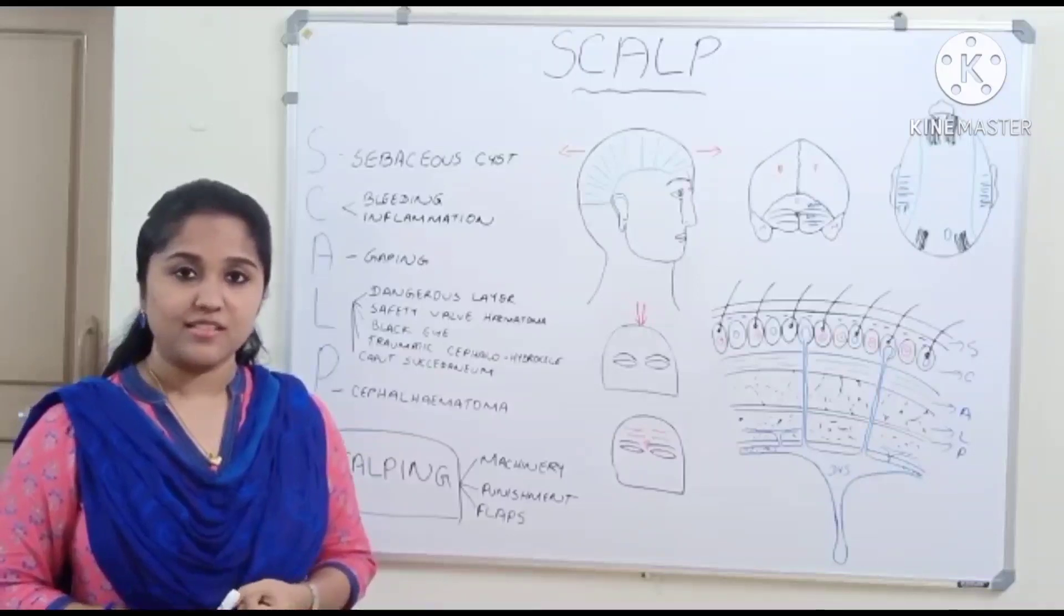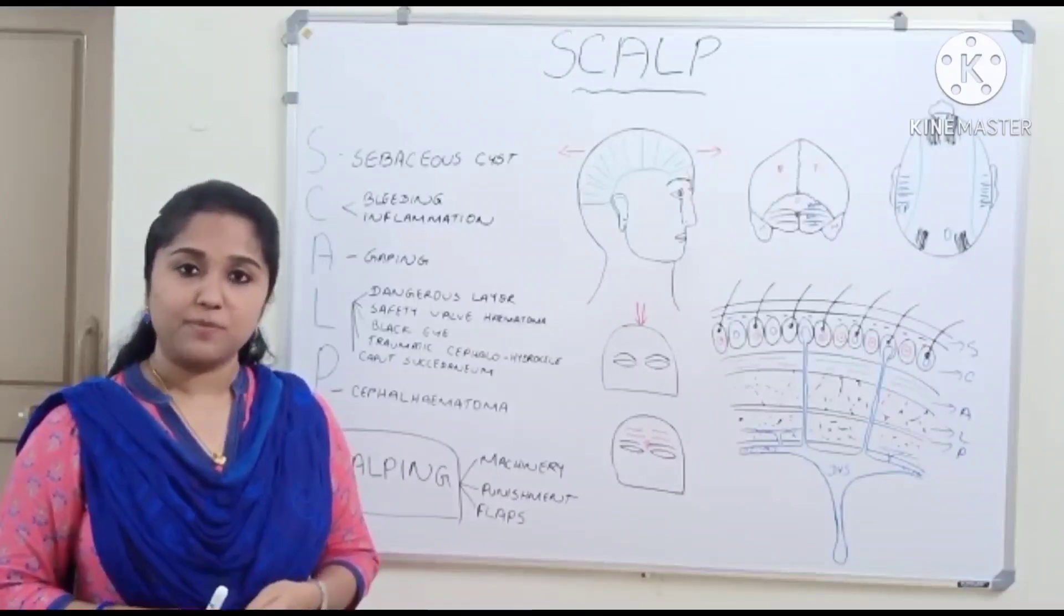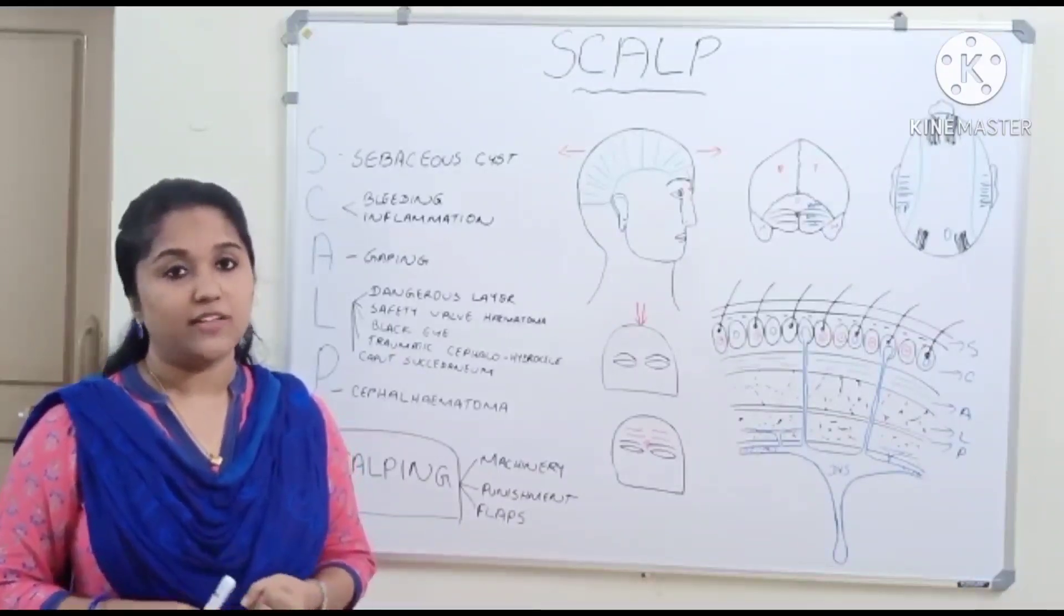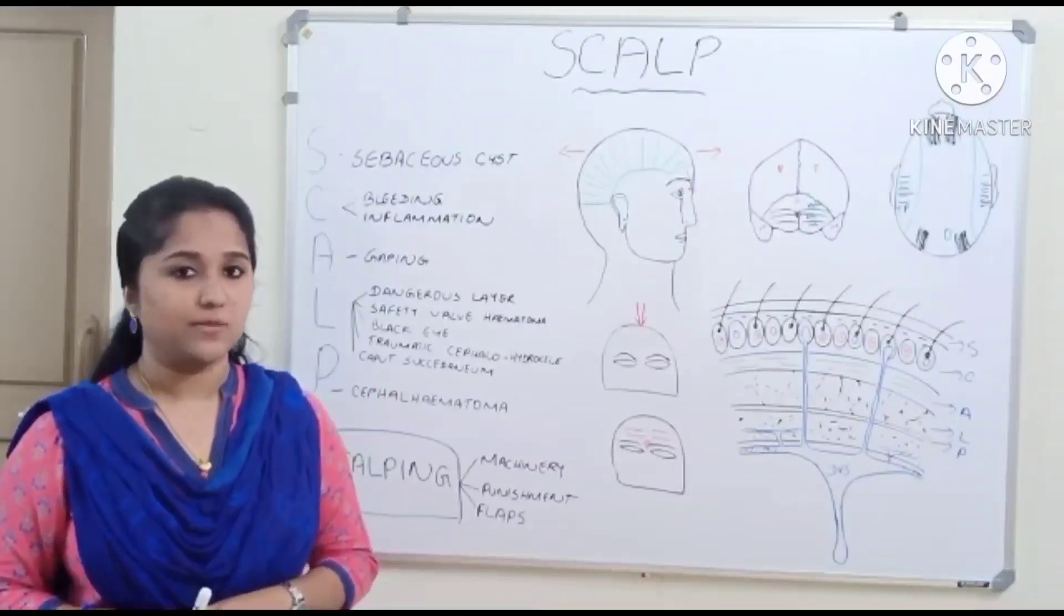This is a very simple but very important topic. I will be discussing this under the following headings: attachments, layers, applied aspects related to each layer, nerve supply, arterial supply, venous drainage, and lymphatic drainage. Today I will be discussing the attachments, layers, and applied aspects.